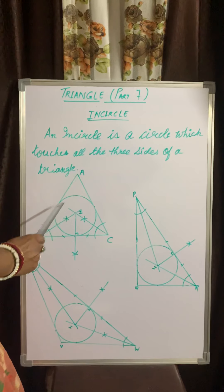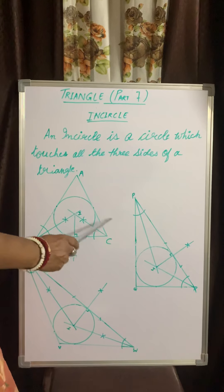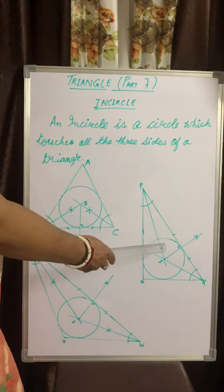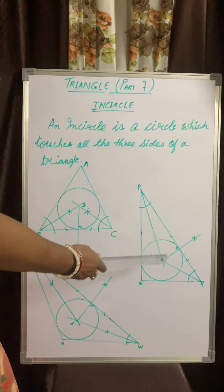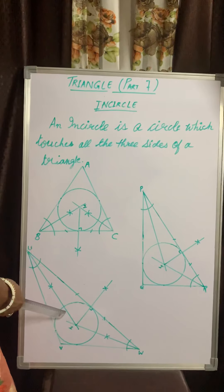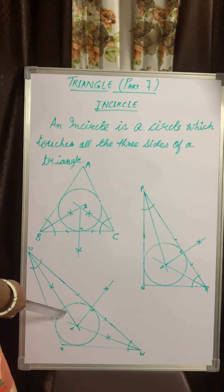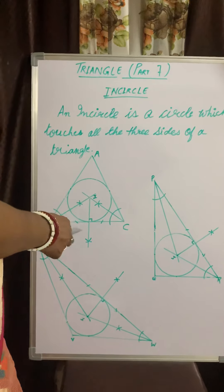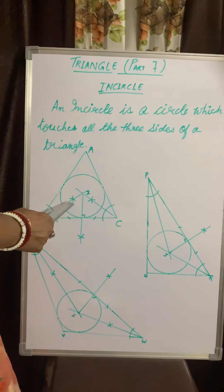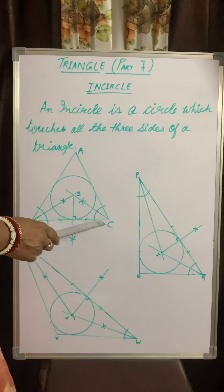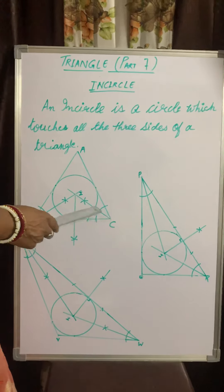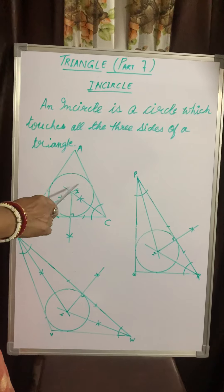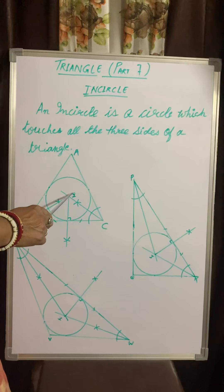Here we have considered three different types of triangles: an Acute-Angle Triangle, a Right-Angle Triangle, and an Obtuse-Angle Triangle. For drawing the in-circle, we have to draw the bisectors of the angles of a triangle.